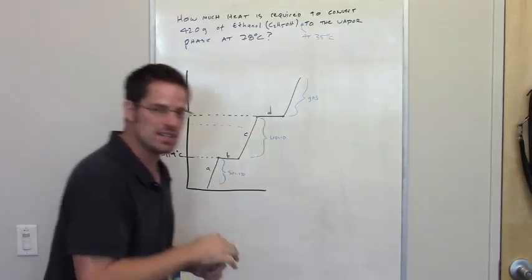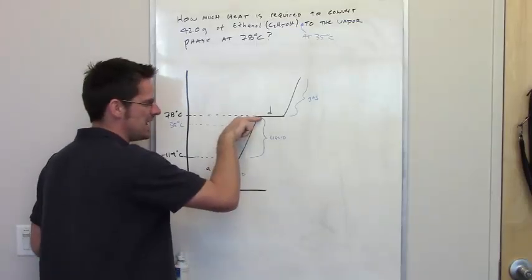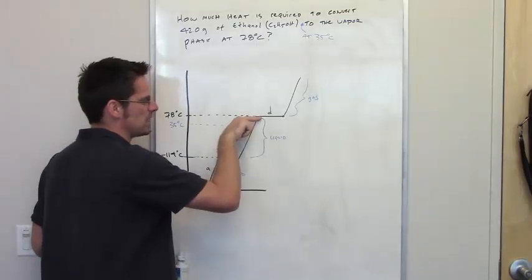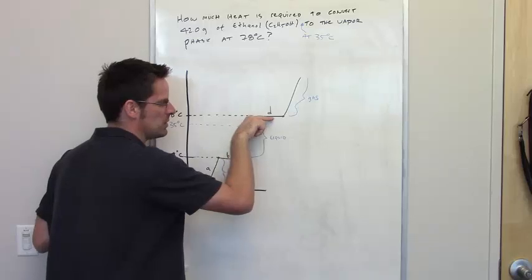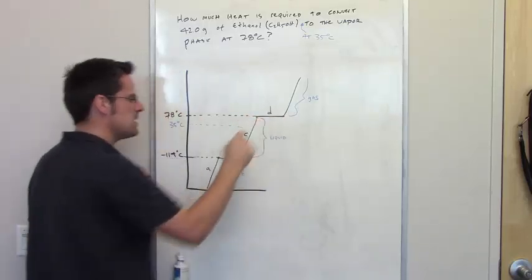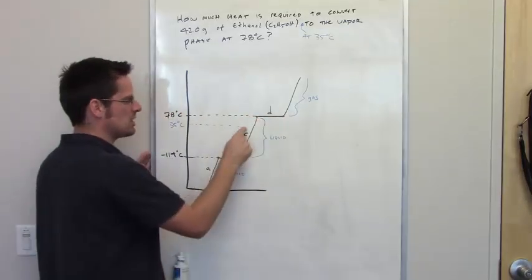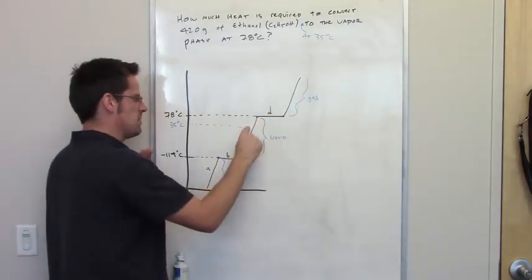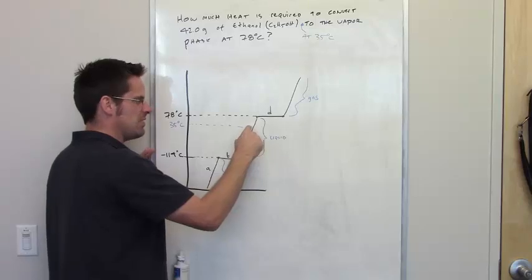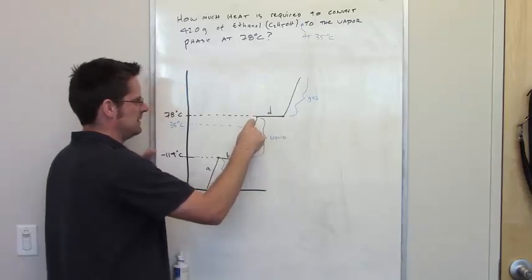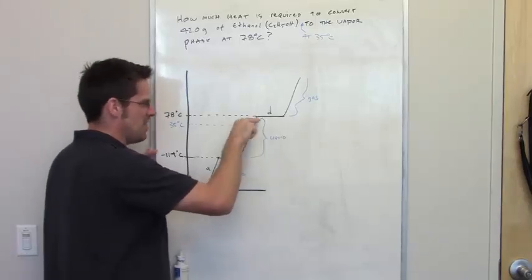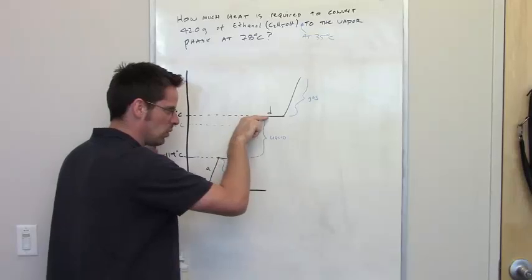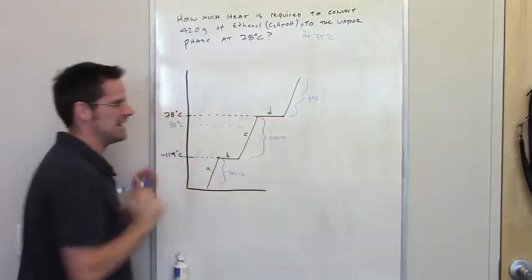Once I hit 78 degrees Celsius, I then have to take that 42 grams and convert all of it from a liquid to a gas. In other words, I have to go from 35°C up the slope until I hit 78°C, and then go across plateau D.